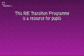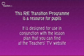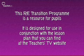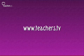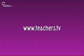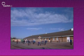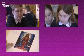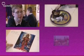This RE Transition program is a resource for pupils, designed for use in conjunction with the lesson plan at the Teachers TV website. Pupils from Year 6 and Year 7 in Easington, County Durham, explore symbols in Christianity, Judaism, Hinduism and their everyday lives.